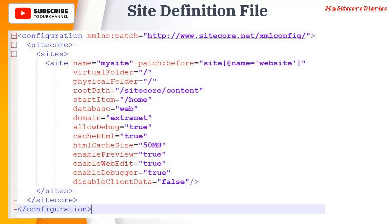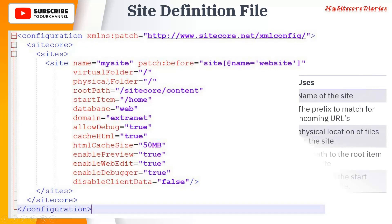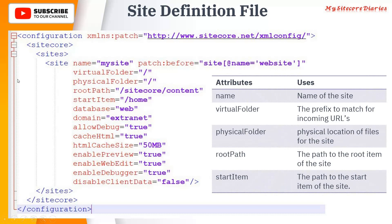Let's take a detailed look at the site definition file. If you open it and look at the site node, you'll see a structure under sitecore > sites > site with different attributes. The 'name' attribute is the name of your website. Since this is a patch file, you need to add the patch before your default 'website' entry. We covered patches in a previous video — a link will be in the description. The patch inserts the new site definition before the default 'website' node.